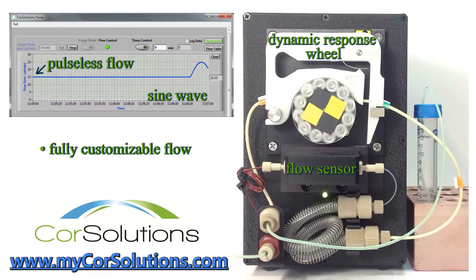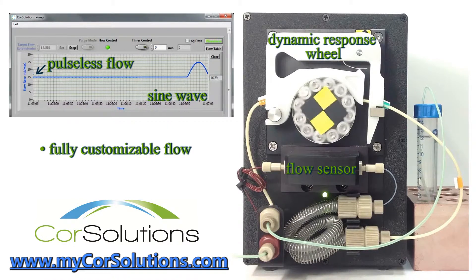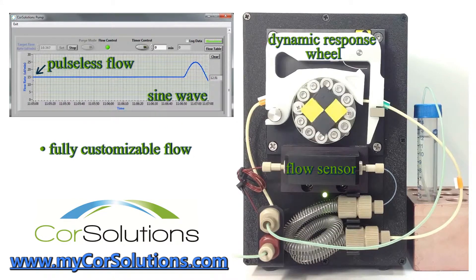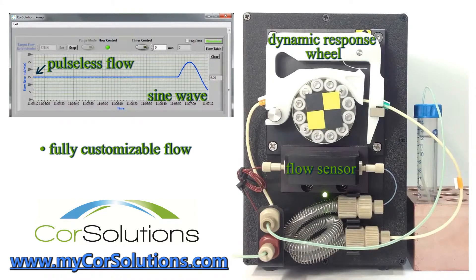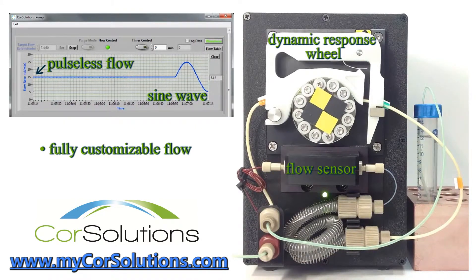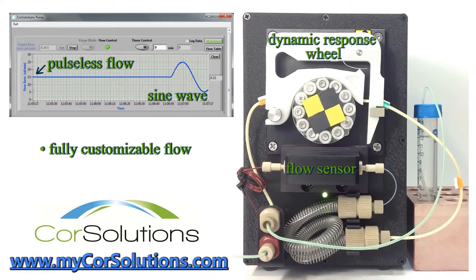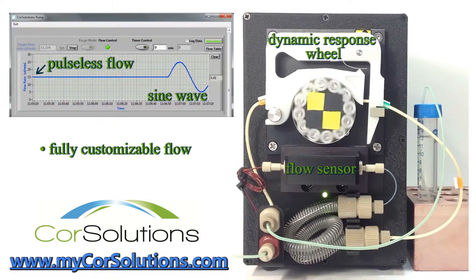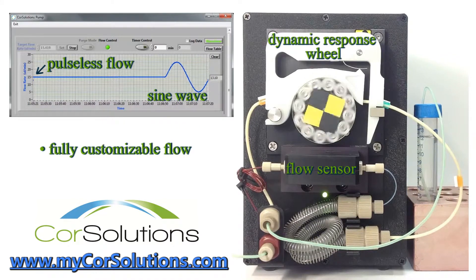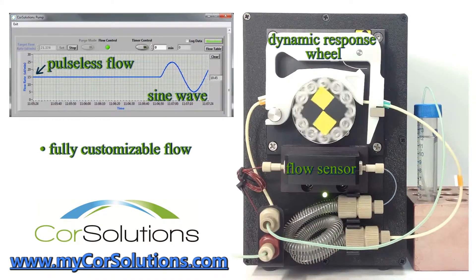As a peristaltic-based pump, the PeriWave offers the ability to recirculate and conserve fluid, in addition to the ability to aspirate and dispense it. The PeriWave is also able to actively maintain a 0 nL per minute flow rate, making it the ideal solution for cell or particle manipulation or stop flow.